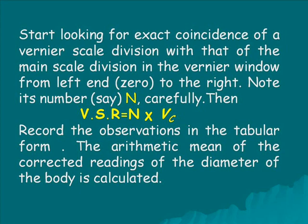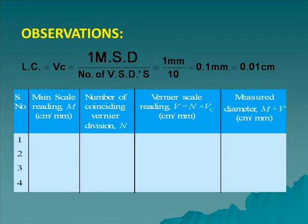Record the observations in a similar way and in the tabular form, write down all these values. Calculate the arithmetic mean of all the readings. The readings are observed or noted in the tabular form given. Here we are discussing about the observations.